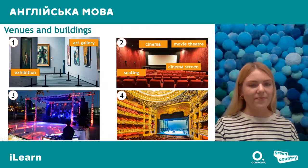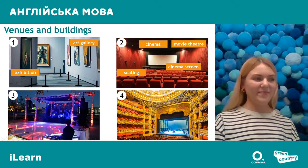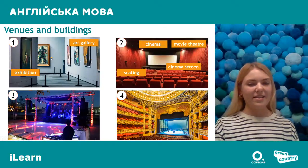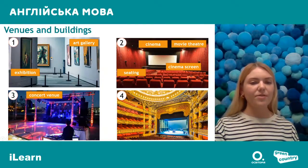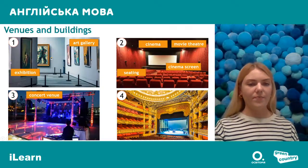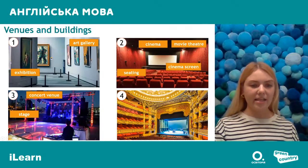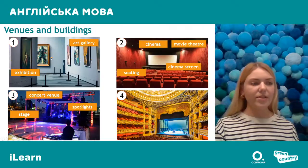Number three — a gig happens there, but what is the name of the place itself? The venue where we can have gigs and concerts is a 'concert venue' or 'concert hall' — місце де проводяться концерти. Here we can also see a stage where musicians perform, and spotlights (прожектори). Number four — that is a theater.